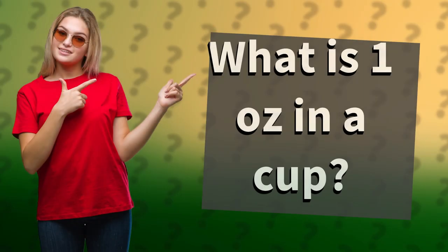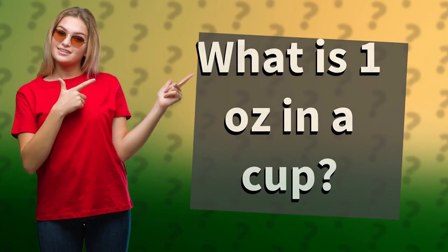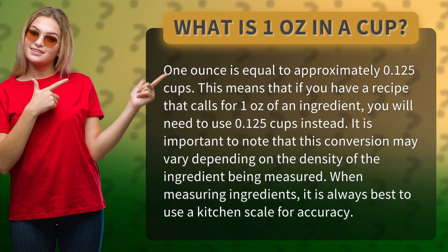What is one ounce in a cup? One ounce is equal to approximately 0.125 cups. This means that if you have a recipe that calls for one ounce of an ingredient, you will need to use 0.125 cups instead. It is important to note that this conversion may vary depending on the density of the ingredient being measured.